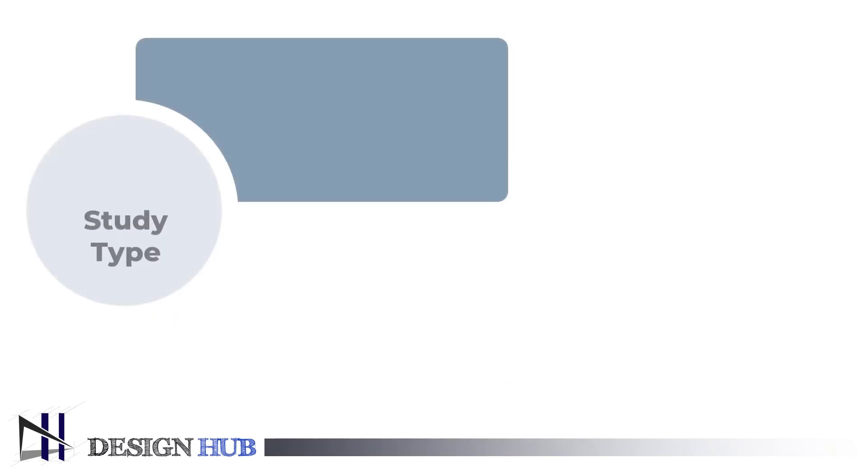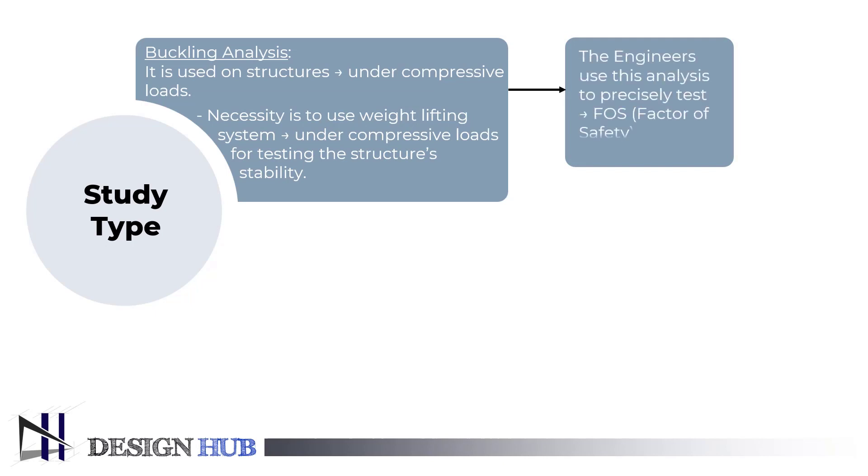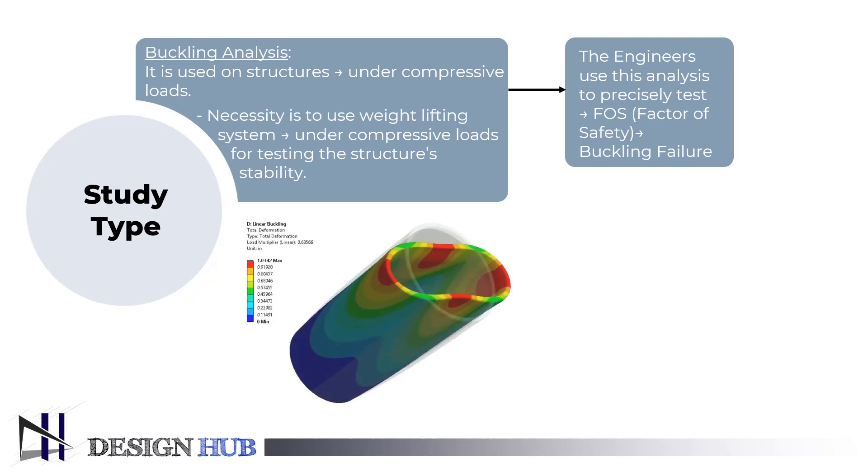The ninth study type is buckling analysis. The stability of a structure under compressive loading conditions is assessed by buckling analysis. It will be necessary to use a weight lifting system under compressive loads to test the structure's stability. All of the challenging buckling problems that cannot be resolved manually can be solved using the FEA routine called buckling analysis.